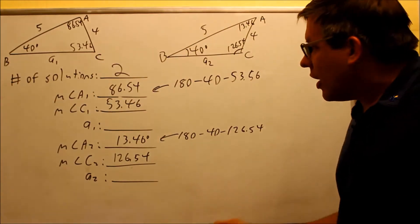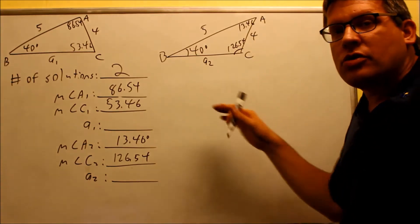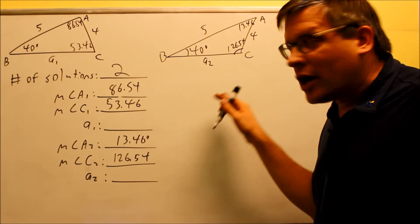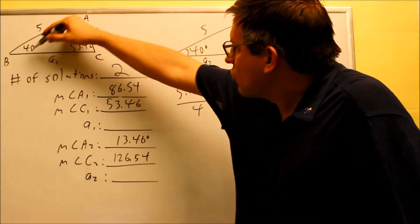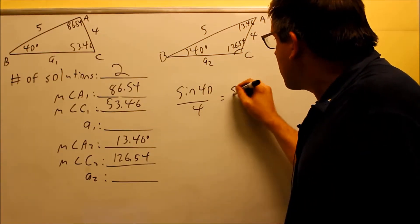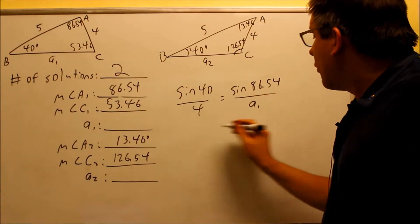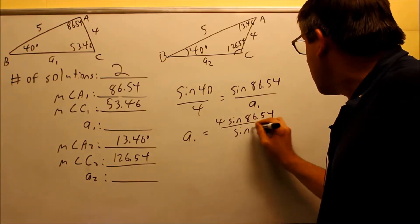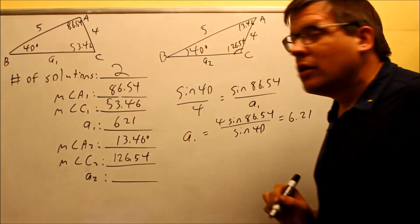We have two different triangles. What you need to do is figure out A1 and A2 separately by doing two different equations. We're still going to use the law of sines with the information provided for each triangle. For this one, we start with our known ratio, sine 40 over 4, and solve for A1 using 86.54 degrees. So sine 86.54 over A1, and if I solve for this, A1 equals 4 sine 86.54 over sine 40, which gives you 6.21.